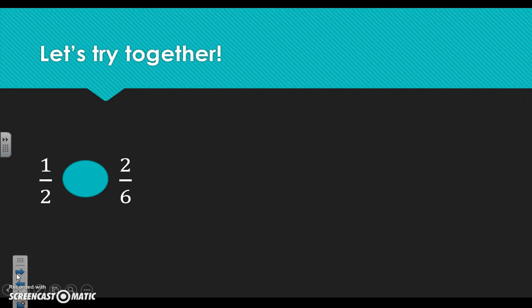Let's take a look at our first problem. We have one half and we have two sixths. Before we can compare them, we have to see if the number in the denominator is the same for both. It's not. To be able to compare them, we need to make sure they have a common denominator — the same number in the bottom. To do that, we need to find a number or a multiple that they both share.